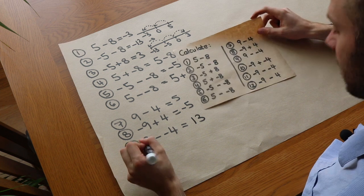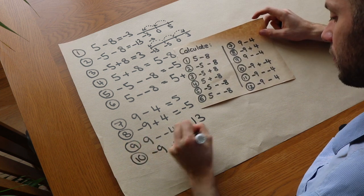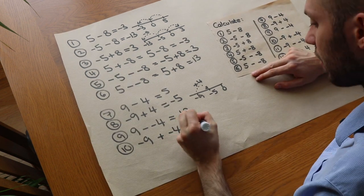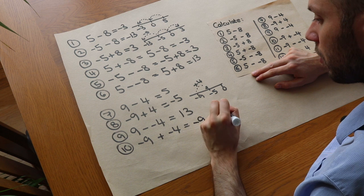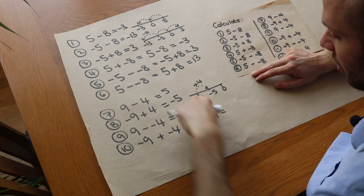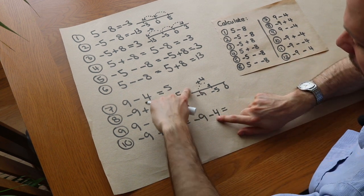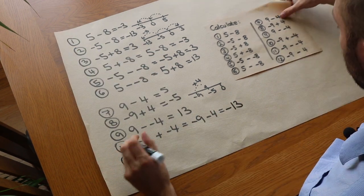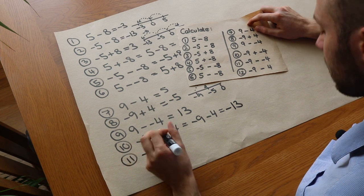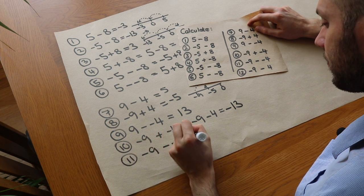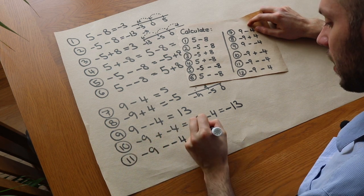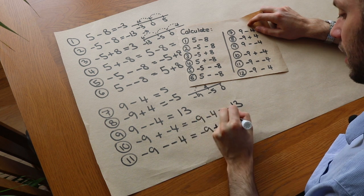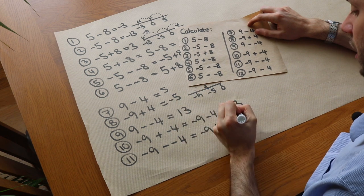We've got ten: minus nine plus negative four. The plus and minus next to each other becomes minus, so it's minus nine minus four. We're at minus nine and we get four further away from zero, going down four, so we end up at minus thirteen. Eleven: minus nine subtract negative four — the two minuses become a plus, and we already know that equals minus five from earlier.